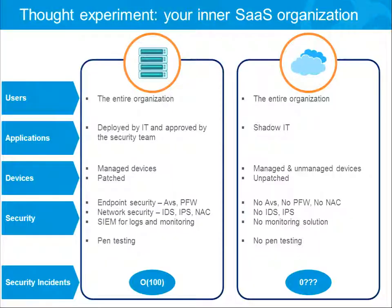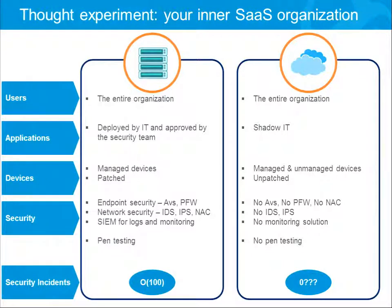The case I want to make is that those attacks are not only about stealing information from SaaS applications. There's a fundamental problem in the way we view and secure our SaaS applications. To help explain this, I'll try a thought experiment. Imagine your organization as an overlay of two different organizations: your on-premise organization and your SaaS organization. They're both working together inside your company, and both contain your entire organization.